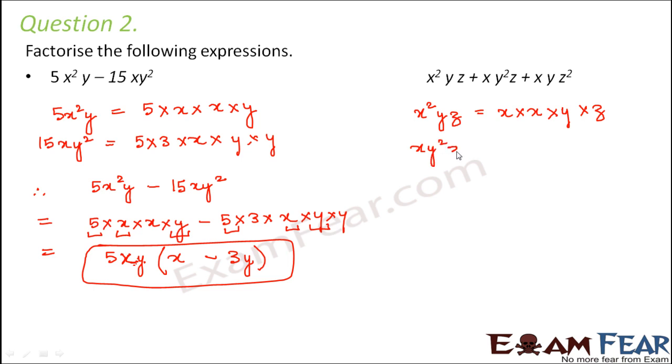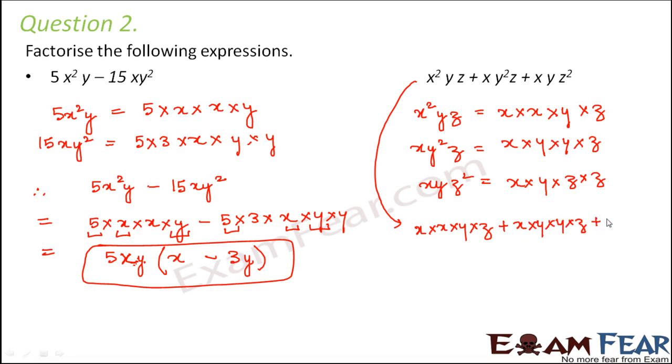xy²z can be written as x×y×y×z, and xyz² as x×y×z×z. Therefore this expression can be written as x×x×y×z + x×y×y×z + x×y×z×z.